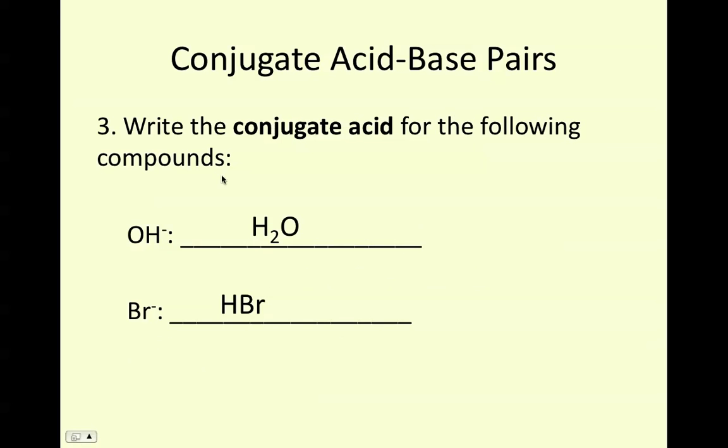Alright. And looking at the opposite, if we want to look at the conjugate acid, we have our OH- with a negative 1 charge forming H2O, so we've added in a proton. And then we have Br- with a negative 1 that's now becoming HBr by, again, adding in a proton to write the conjugate acid.